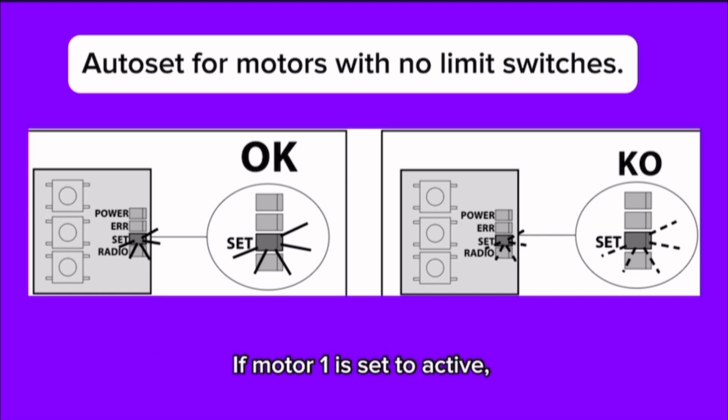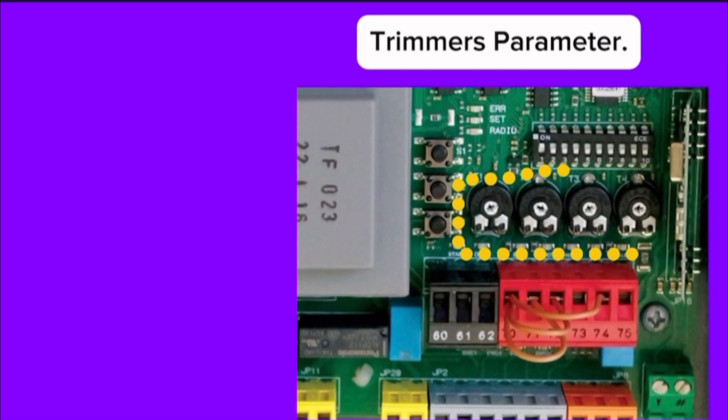If motor 1 is set to active, the phases relative to motor 2 are not performed. Trimmer's parameters.